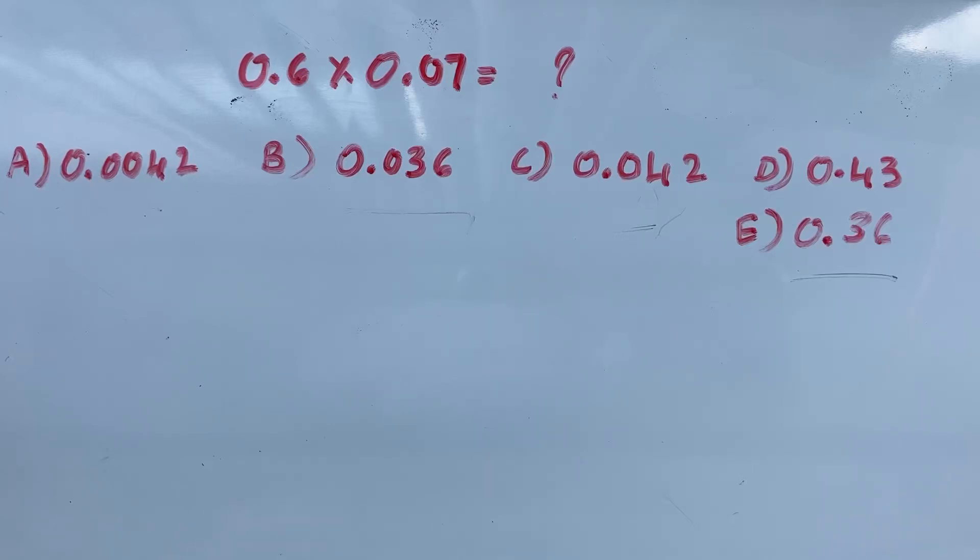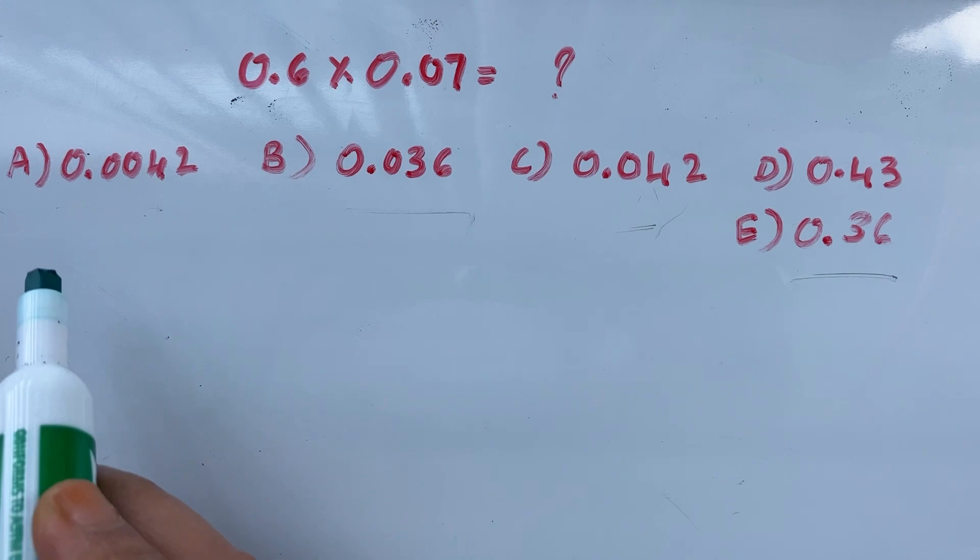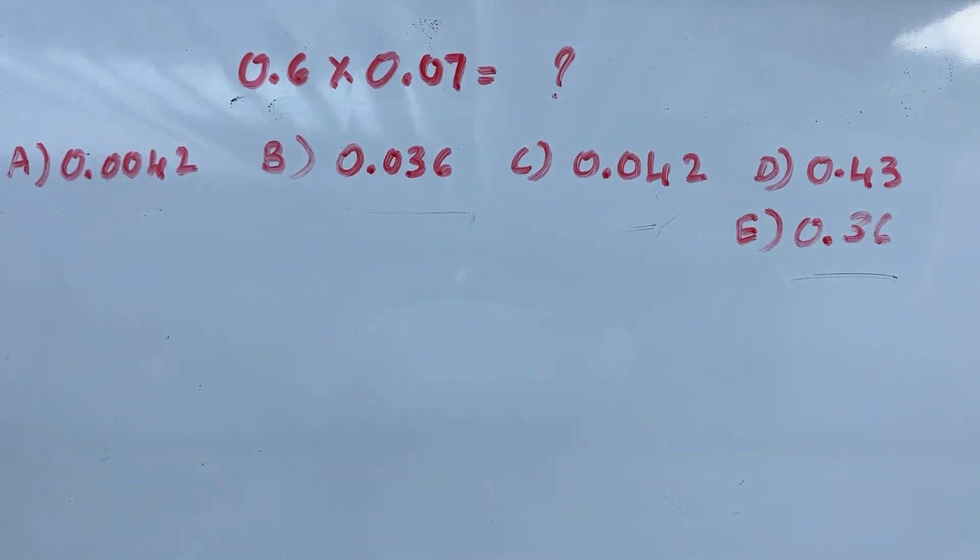Namaste everyone. Today you are going to find 0.6 times 0.07, decimal multiplication. I have given you options A, B, C, D, and E.